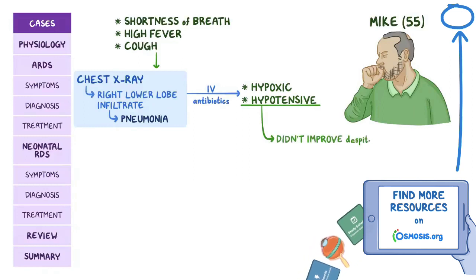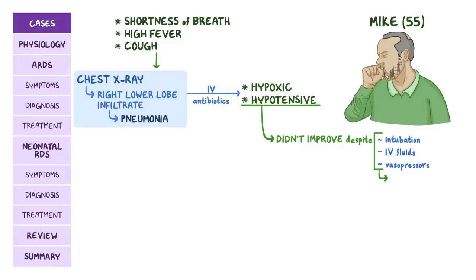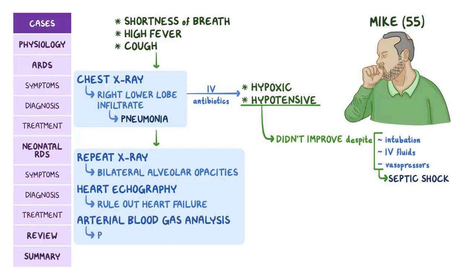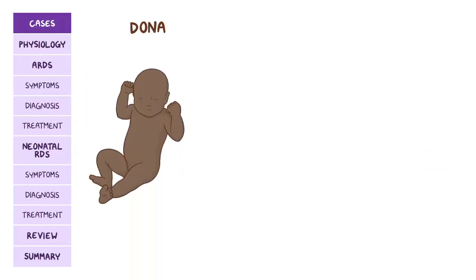Because his hypotension didn't improve despite intubation, IV fluids, and vasopressors, he is diagnosed with septic shock. A repeat x-ray detected newly developed bilateral alveolar opacities. Heart echography ruled out heart failure, and arterial blood gas analysis revealed a PF ratio of 109 mmHg.